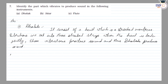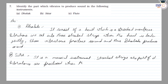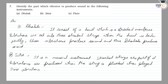Option B is guitar. It is a musical instrument. Strings are a part of it. Vibrations are produced when the string is plucked. These vibrations produce sound.